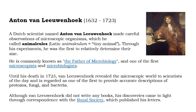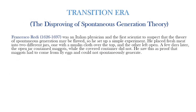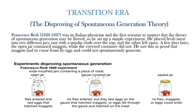When microorganisms were known to exist, most scientists believed that such simple life forms could surely arise through spontaneous generation. During the transition era, the main focus was to resolve the controversy over spontaneous generation, which involved experiments mainly by Francisco Redi, John Needham, and Lazaro Spallanzani.